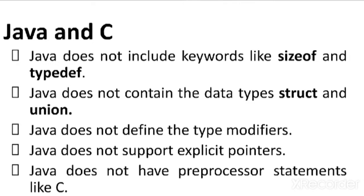Java does not contain data types like struct and union. Struct and union are user-defined data types in C language. These two data types are not in Java; instead, in Java we have the class data type. Using this class data type, the user can create his own data type.